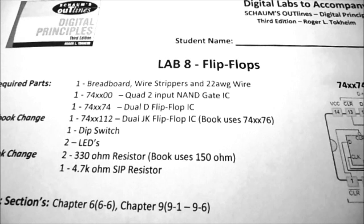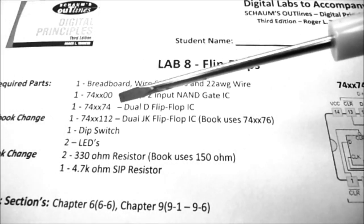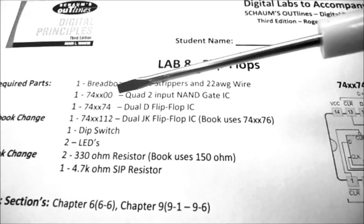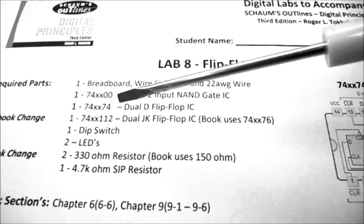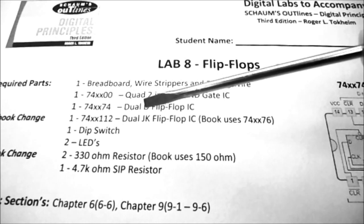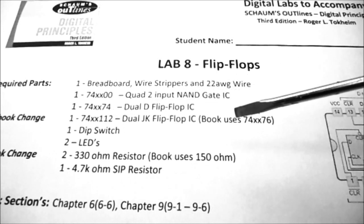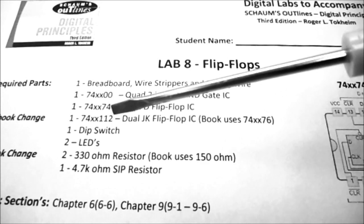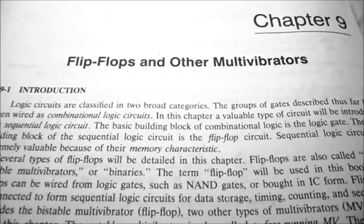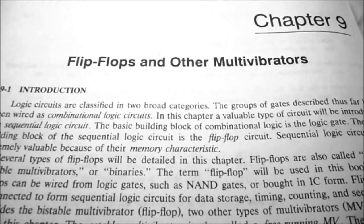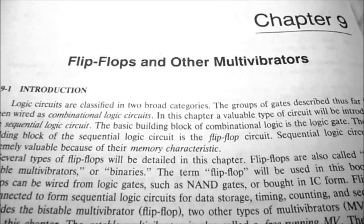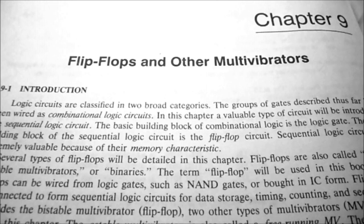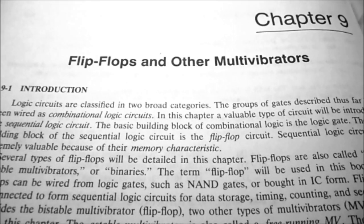Today we're going to look at lab number eight, flip-flops. We're going to be using some basic gates — the 7400. We're going to be using a 7474 dual D flip-flop, and the textbook has changed from the obsolete 7476 to the 7474 and 112. We're working from chapter nine, flip-flops and other multivibrators. The lab is broken into two parts: one for flip-flops and one for multivibrators. Flip-flops are fairly complex, so I highly recommend you read your textbook.